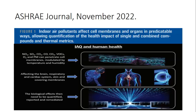I start Module 3 with a figure taken from the latest ASHRAE journal, introduced purposely to help all HVAC professionals understand the importance of designing air conditioning systems for hospitals. The figure clearly shows how indoor air quality affects human health — you cannot see air, but if you don't treat the air, it treats human beings very badly. It is an established fact that indoor air pollutants affect cell membranes and organs in predictable ways, allowing quantification of health impacts of single and combined compounds and thermal matrices, from the ASHRAE journal of November 2022.